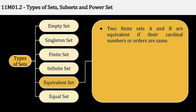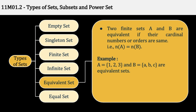Equivalent set: two finite sets A and B are equivalent if their cardinal numbers or orders are the same. अगर उनके number of elements same हैं, मतलब कि वो equivalent sets हैं। That is n(A) = n(B), cardinal number of A = cardinal number of B। Example: A = {1, 2, 3} and B = {a, b, c} — इसमें भी 3 elements हैं, इसमें भी 3 elements हैं, hence equivalent sets हो गए, since n(A) = n(B) = 3।